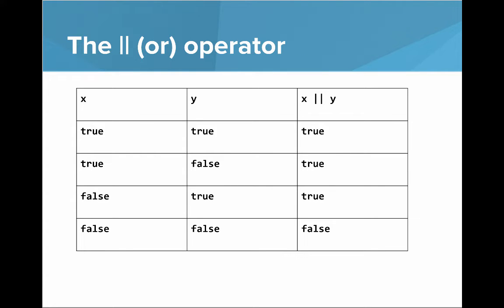Now the OR operator. The OR operator returns true if one or the other is true. If they're both true, then X OR Y is true. If X is true and Y is false, then X OR Y is true. If X is false and Y is true, then X OR Y is true. But if they're both false, then X OR Y is false.